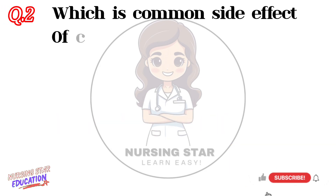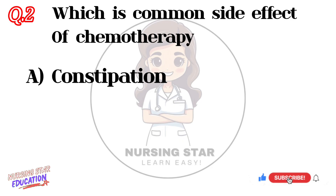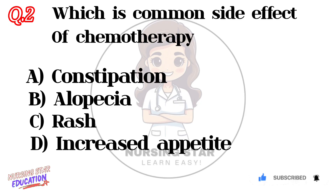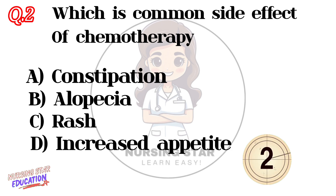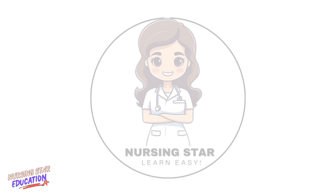Question number two: Which is the most common side effect of chemotherapy? Option A: Constipation. Option B: Alopecia. Option C: Rash. Option D: Increased appetite. Correct answer: B — Alopecia.